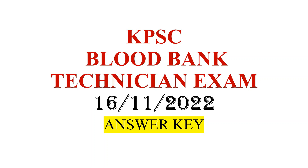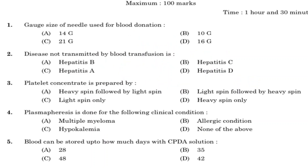First question: gauge size of needle used for blood donation. Option A: 14 gauge. Option B: 10 gauge. Option C: 21 gauge. Option D: 16 gauge. Answer is Option D, 16 gauge. Blood donation uses 16 gauge. Normal venous blood collection is 21 gauge.